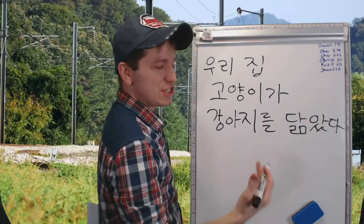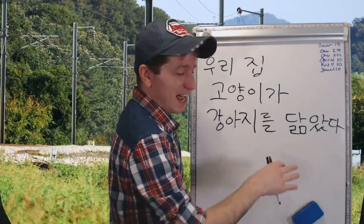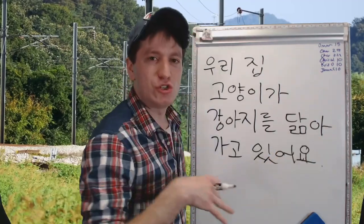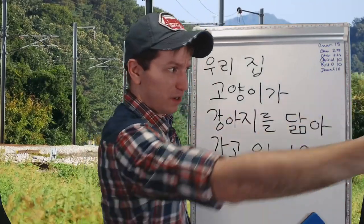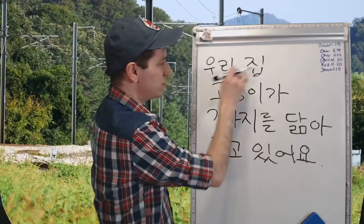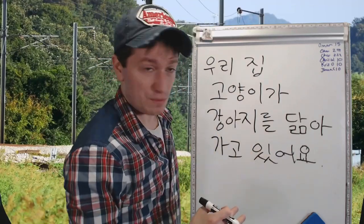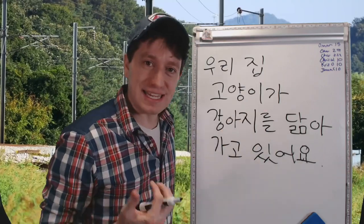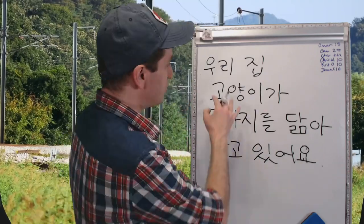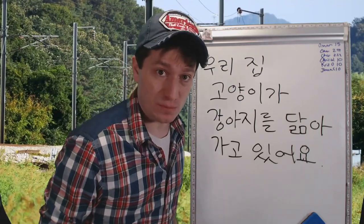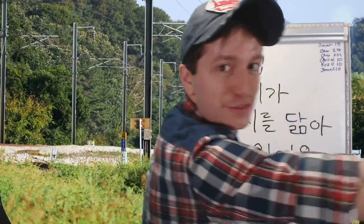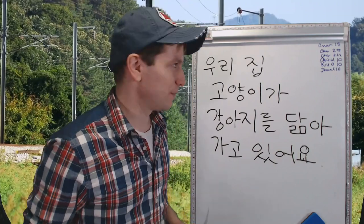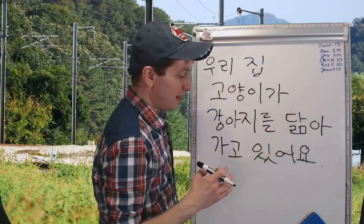닮다 means to resemble, and is used in the past tense. 우리집 고양이가 강아지를 닮았다 — my cat looks like a dog. 닮아가다 means to resemble and continually resemble — more and more, going toward the future. 우리집 고양이가 강아지를 닮아가고 있어요 means my cat is looking more and more like a dog every day — continually looking more like a dog into the future.